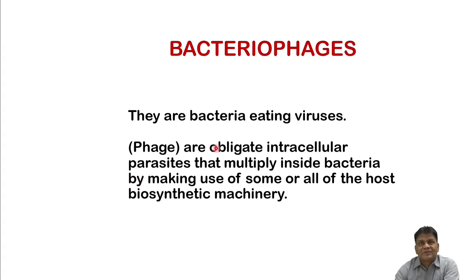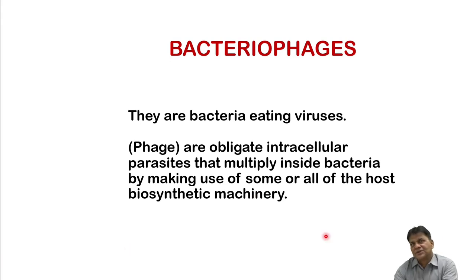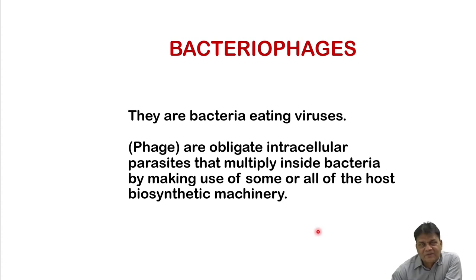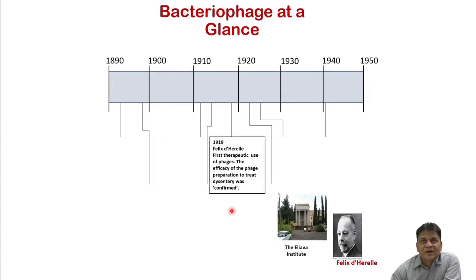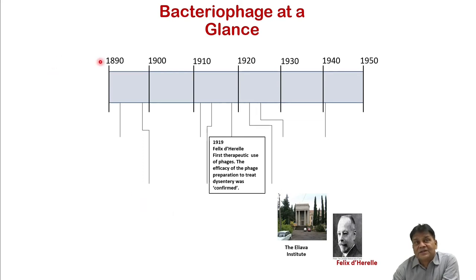The next alternative is bacteriophages — bacterial-eating viruses. Phages are obligate intracellular parasites that multiply inside bacteria by making use of some or all of the host biosynthetic machinery. Just as every living cell has its viruses — humans have coronavirus, HIV, hepatitis B, hepatitis C, adenovirus, parvovirus, poliovirus — likewise every type of bacteria has its own viruses, called bacteriophages. Let us now see the history of bacteriophage development starting from 1890.